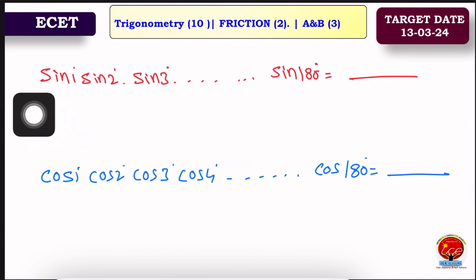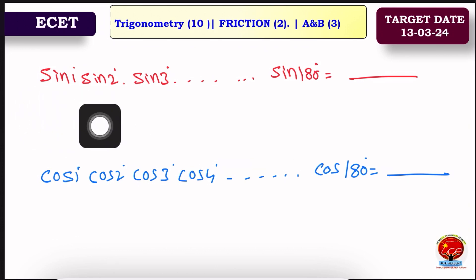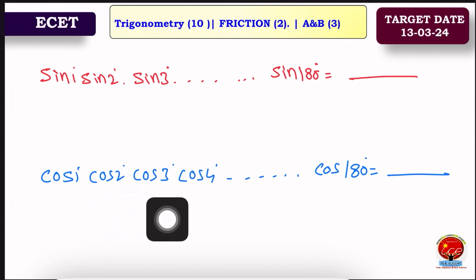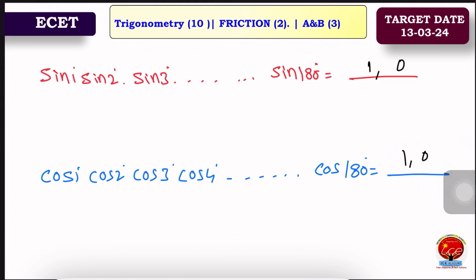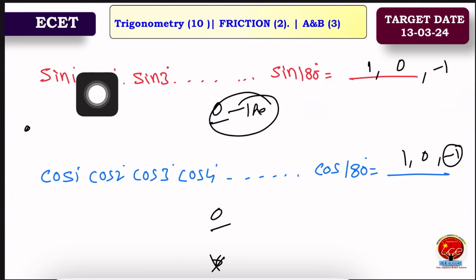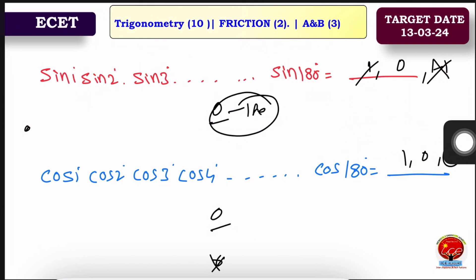Last question in the video: sin1° × sin2° × sin3° × ... × sin180°, multiplied by cos1° × cos2° × ... × cos180°. The answer: sin180° = 0, so the entire product of sines equals 0. Similarly for the cosine side, cos90° = 0 so that product is also 0. Therefore the answer is 0.